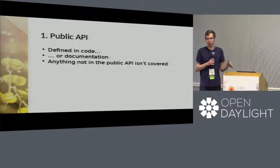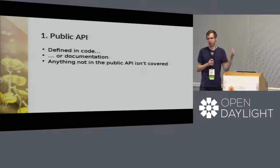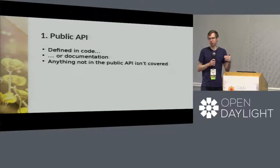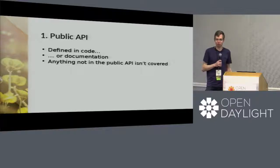Anything that's not in the public API you've defined is not covered by the semantic versioning spec. That means even classes or public methods accessible in Java — if they're not part of your public API, all the guarantees of semantic versioning don't apply. There's still a certain amount of freedom, and it means you do need to document your stuff, because users will rely on documentation rather than implementation. We're not quite there yet in Open Daylight.